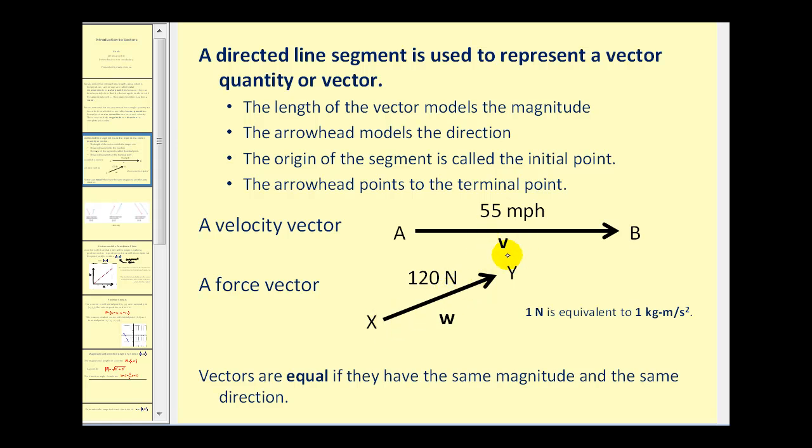You can also label a vector with a bold lowercase letter. And if you can't bold the letter, you should put a little vector symbol above the letter. Vectors are equal to each other if they have the same magnitude and the same direction.